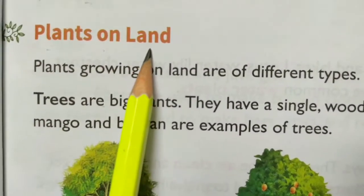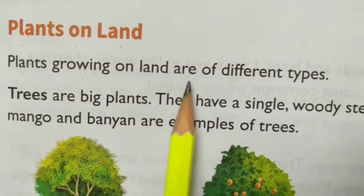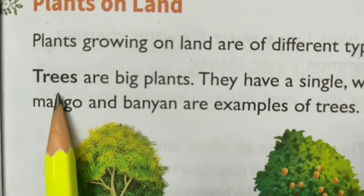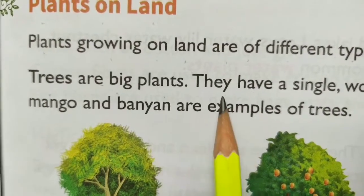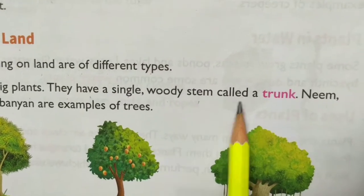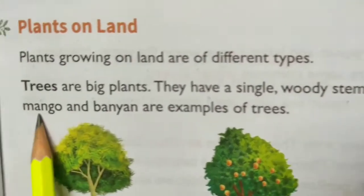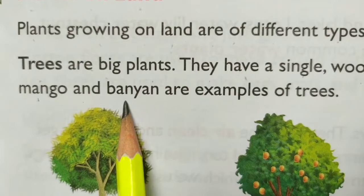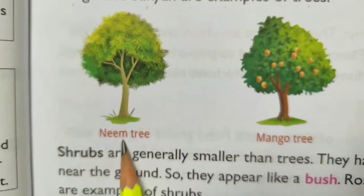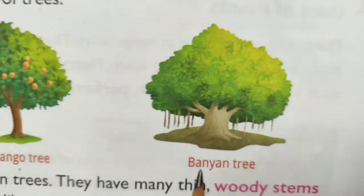Plants on land. Plants growing on land are of different types. Trees are big plants. They have a single woody stem called a trunk. Neem, mango and banyan are examples of trees. This is a neem tree, this is a mango tree and this is a banyan tree.